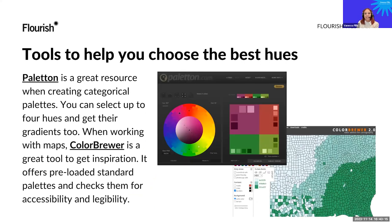Color scales aren't the easiest thing to work with, but there are some tools that really help. Paletton is a great resource for creating categorical palettes — you can select up to four colors and get their gradients. Especially when working with maps, ColorBrewer is a great tool for inspiration, offering pre-loaded standard palettes that you can also filter for accessibility criteria, such as palettes that are still accessible for someone with a color vision deficiency.